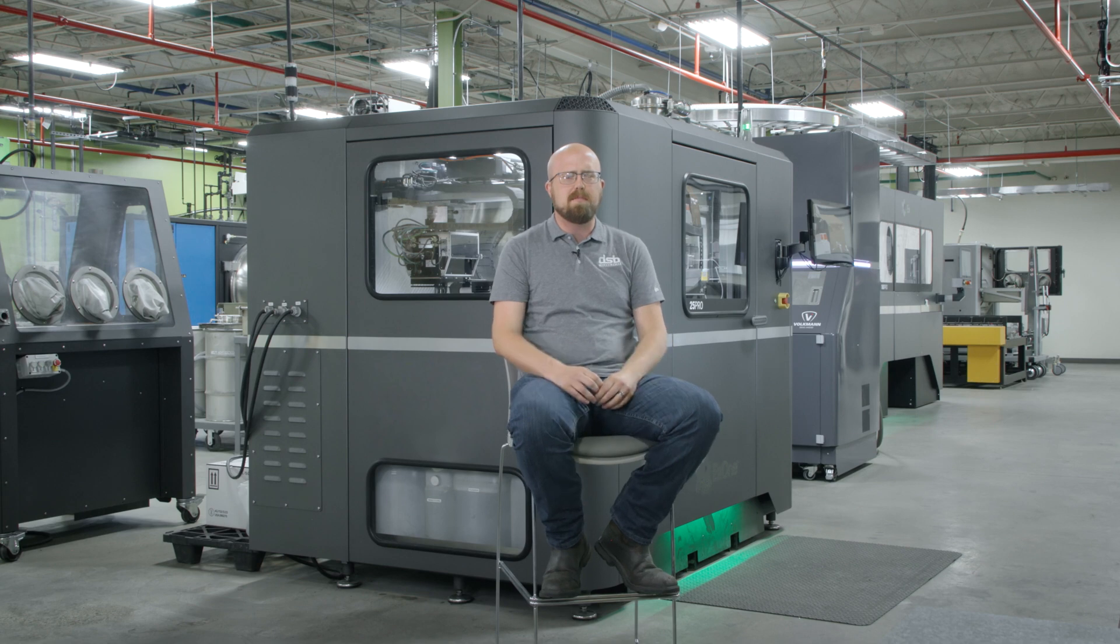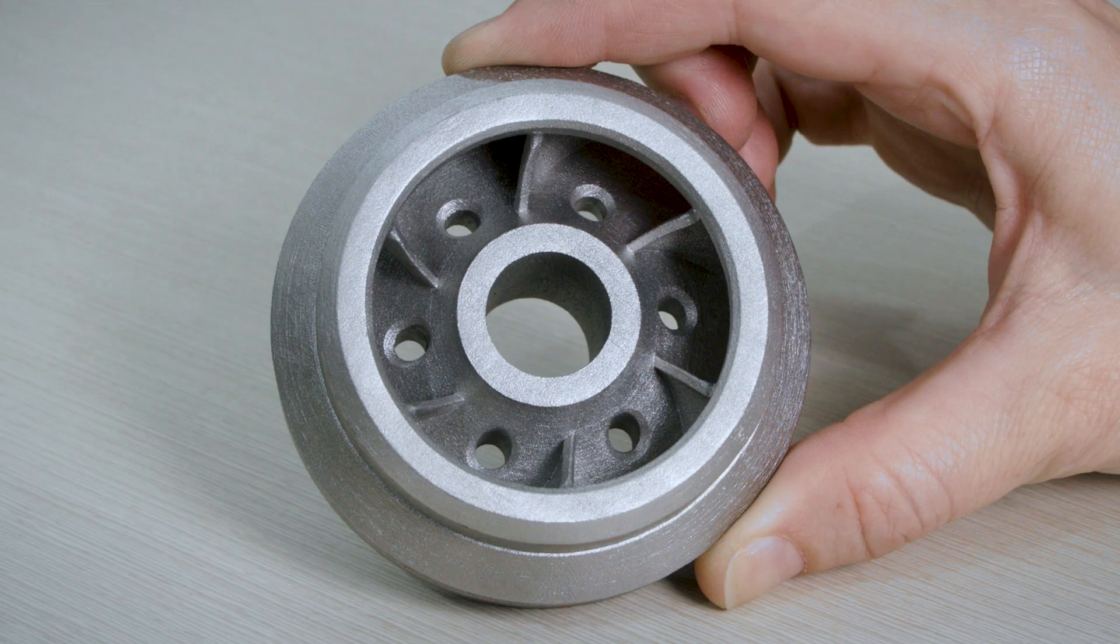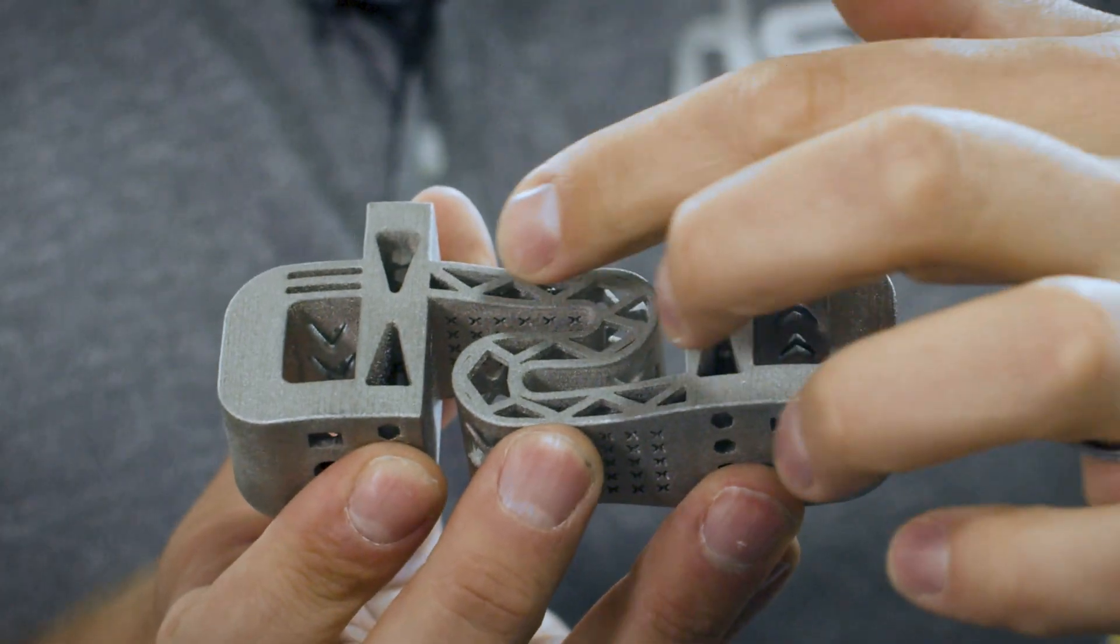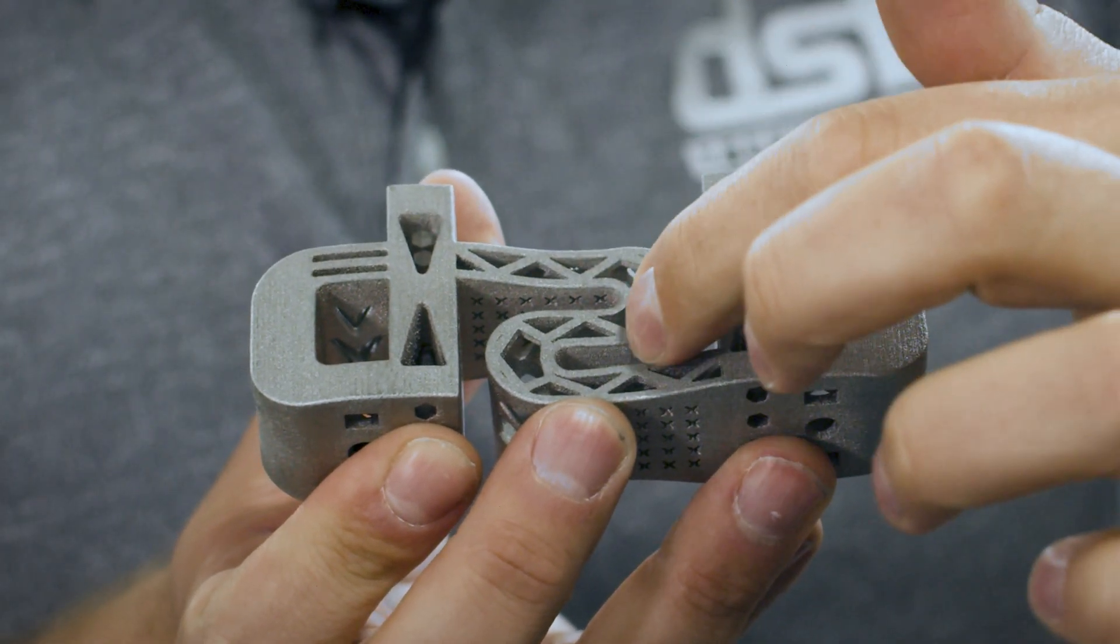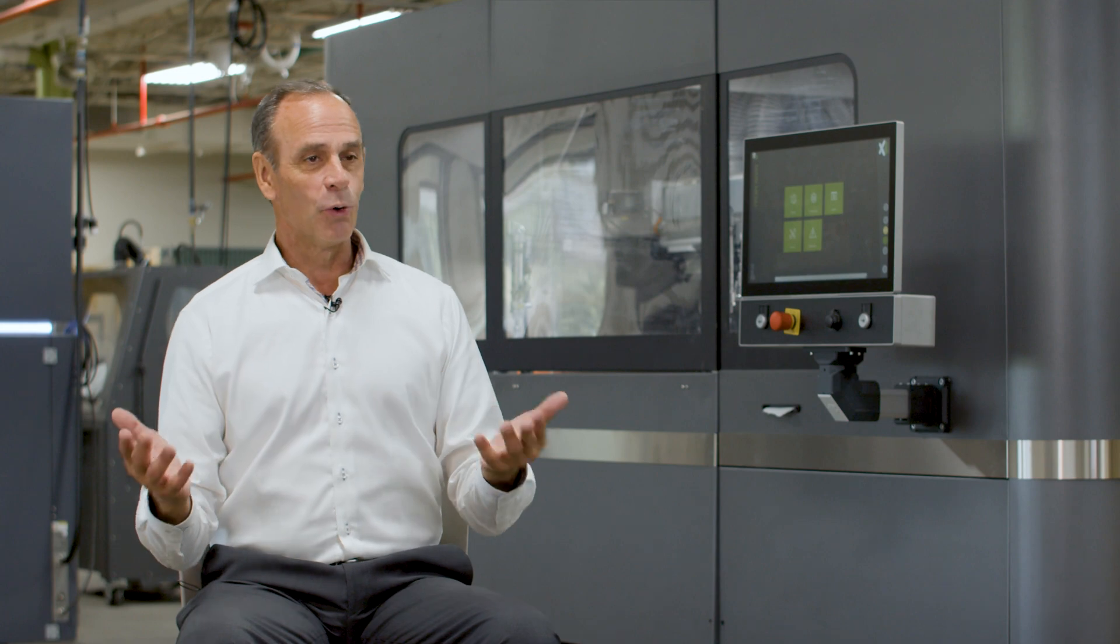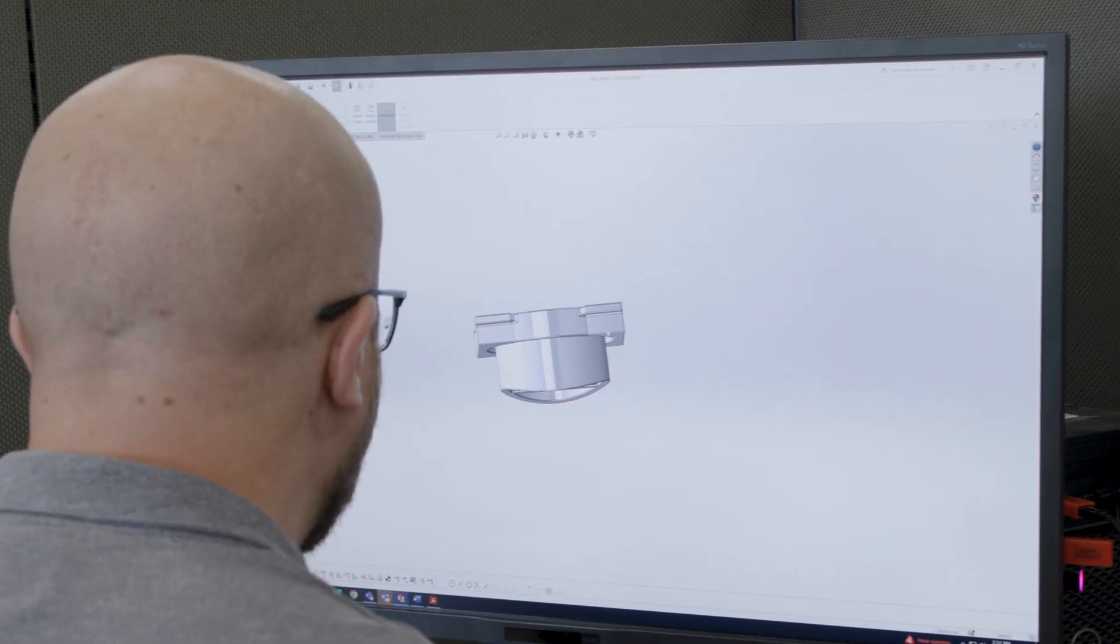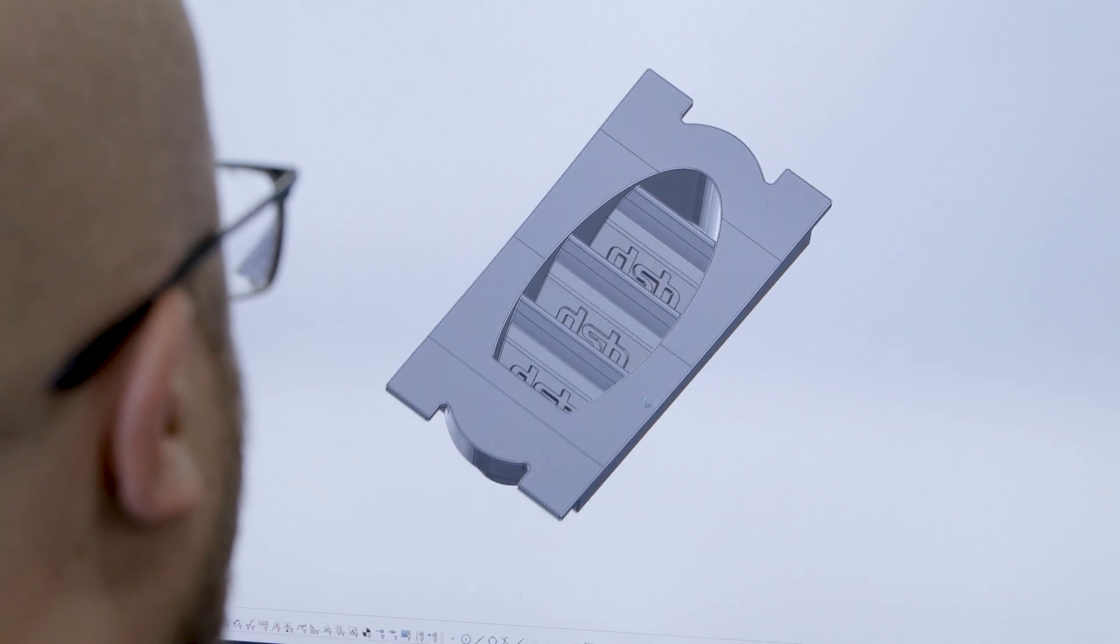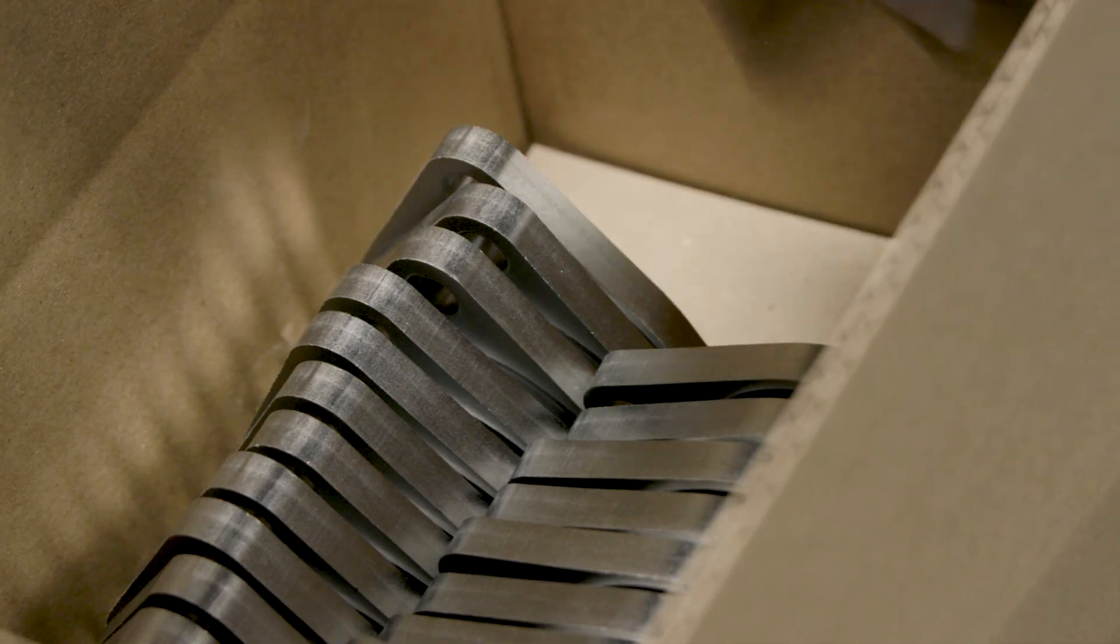With metal binder jetting, we can produce parts with undercuts, internal cavities, lattices, threads. And it's not just that it can make parts that you could never make before, but you do that with no tooling because it's all digital. So you're taking many, many weeks out of that process and the time to market is extremely fast.